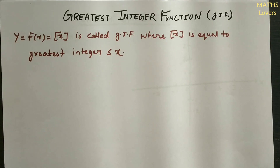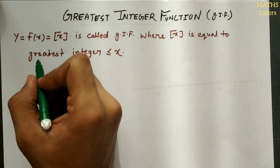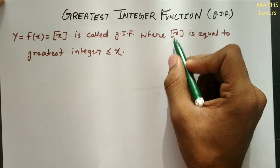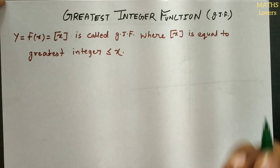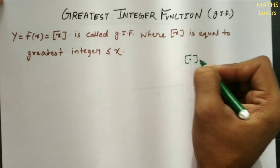In this video we will cover the greatest integer function, one of the important kinds of functions. We will cover what it is, how to draw its graph, and some of its properties. So y = f(x) = [x] is called GIF in short, where [x] equals the greatest integer less than or equal to x. GIF is represented by square brackets.